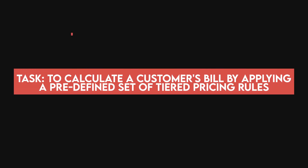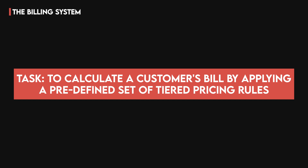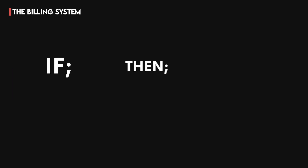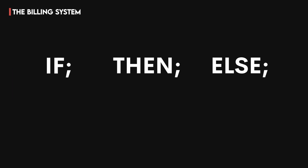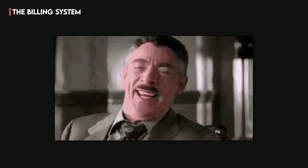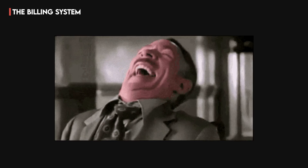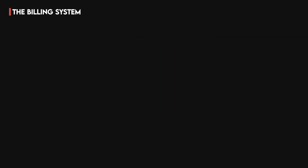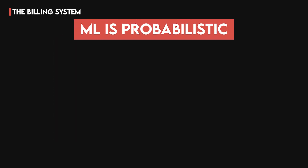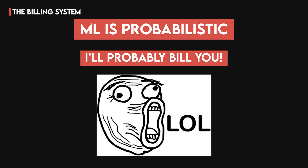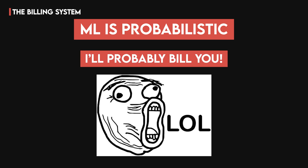Next, consider the billing system. Imagine you're calculating tiered pricing for a SaaS product. This is a classic if-then-else problem that demands perfect precision and auditability. An ML model is probabilistic — it gives you a probably correct answer. You can't probably bill a customer.